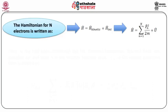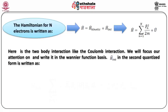The Hamiltonian for N electrons is written as the sum of the kinetic part H_kinetic plus the interaction part H_interaction. The kinetic part is simply p²/2m, with a subscript n summed from n = 1 to N, so for the first electron it is p₁²/2m, the second p₂²/2m, and so on, giving the total kinetic energy plus U. Here U is the interaction part, specifically the two-body interaction such as the Coulomb interaction. We will focus on the interaction part and write it in the Wannier function basis.